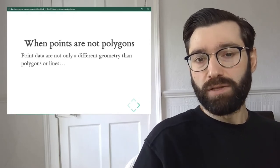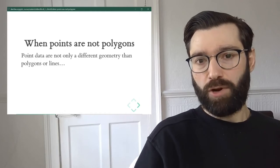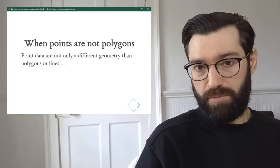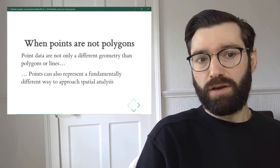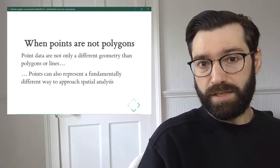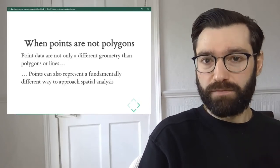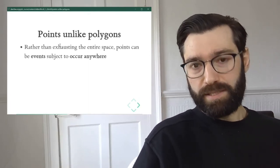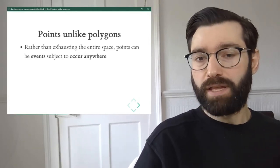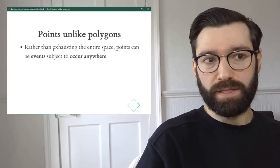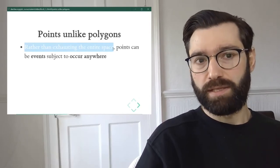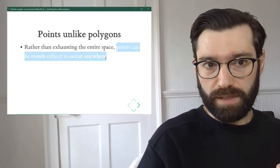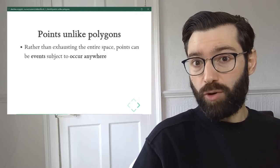Now, the interesting thing with points is that they can also represent a very different set of phenomena. And this is what I term here when points are not polygons. In this case, point data is not only a different geometry than, say, polygons or lines, it's a representation of events. And when we look at this in this way, they are fundamentally different geographic features and geographic entities. Let's see why. The key concept here, and the important aspect that makes points potentially very different from the geographic entities we've used before in this course, is that rather than exhausting the entire space, points represent events that could happen anywhere but only happen in certain locations, are only observed in certain locations.